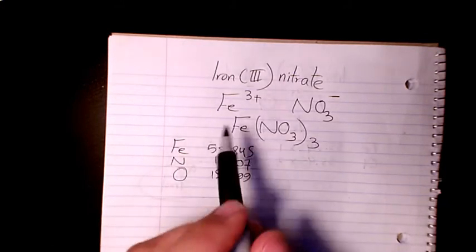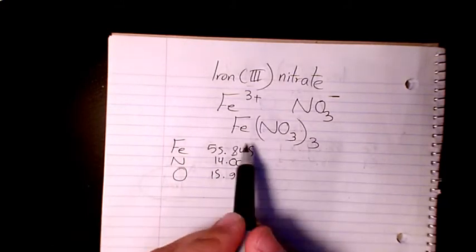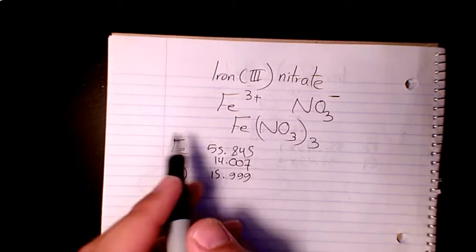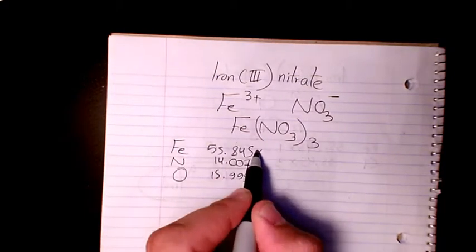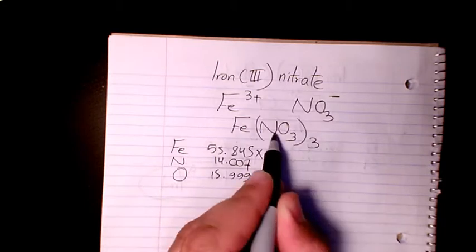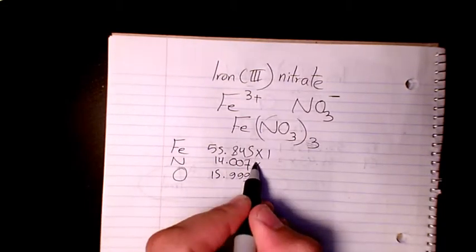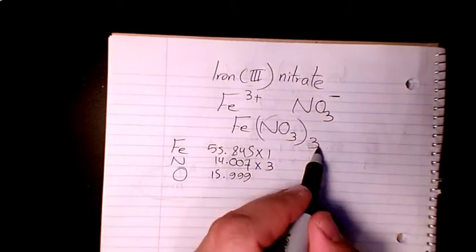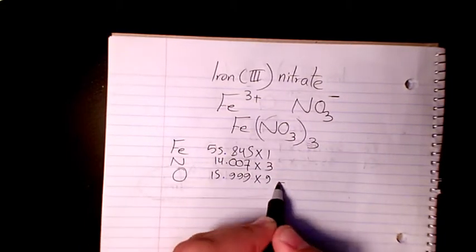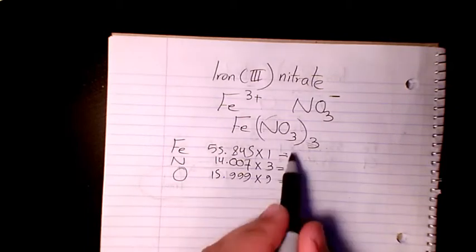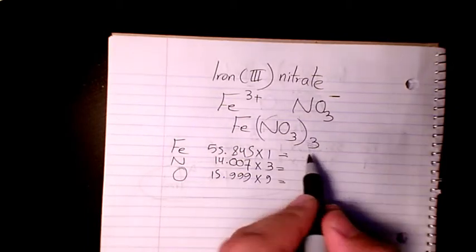Then I need to know how many atoms from each element we have. So we have Fe is one, N is three times one. The three here belongs to the whole thing, so we have three atoms of nitrogen and three times three, we have nine atoms of oxygen here.